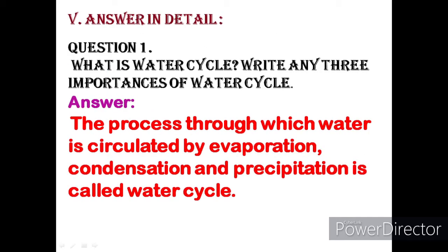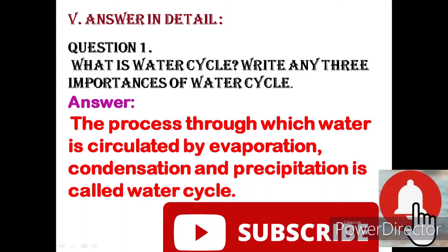Next, Letter Answer in Detail. Question 1: What is the water cycle? Write any three importances of the water cycle. Answer: The process through which water is circulated by evaporation, condensation, and precipitation is called the water cycle.